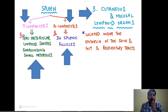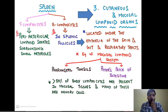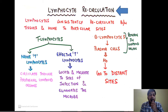The third type is the cutaneous and mucosal lymphoid organs — lymphoid tissue located under the epithelia of the skin, gastrointestinal tract, and respiratory tract. Examples include the pharyngeal tonsils and the Peyer's patches of the intestine. More than 50 percent of the body's lymphocytes are present in the mucosal tissues, and many of these are memory cells.